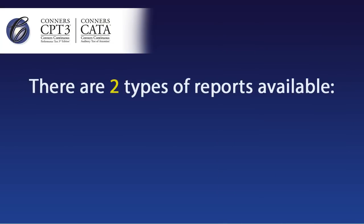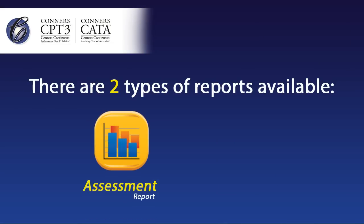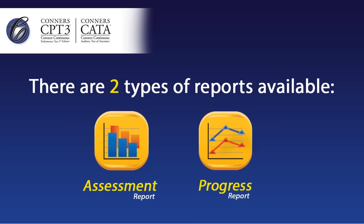There are two types of reports available: an assessment report, which provides information about a single administration, and progress reports, which provide an overview of change over time of up to four administrations.